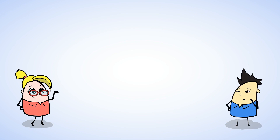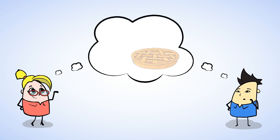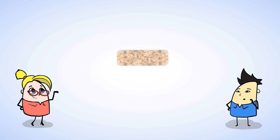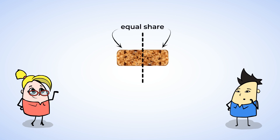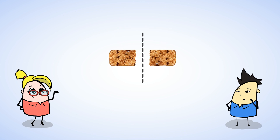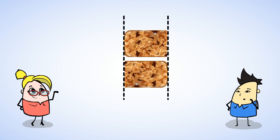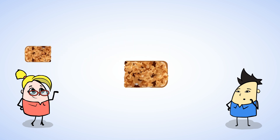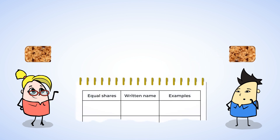Jenny and Chen are here, and they both want to try an apple pie and a granola bar, so they order one of each. But there's only one granola bar, and so they're going to have to share it fairly. So that each of them can have an equal share, each piece has to be the same size — just like this. Now this granola bar was split into two equal shares. Jenny gets half of the granola bar, and Chen gets the other half. When something is split into two equal shares, it's split into two halves.